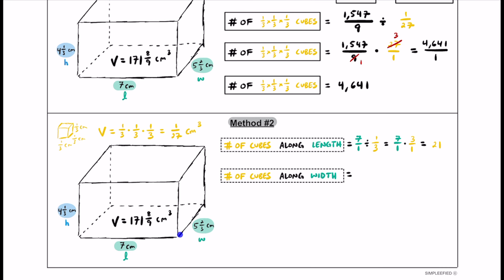Next, the width is five and two-thirds centimeters. Converting to an improper fraction gives 17/3. Dividing by 1/3 means multiplying by the reciprocal: 17/3 × 3/1. The threes cross-cancel, leaving 17. So 17 unit cubes fit along the width.